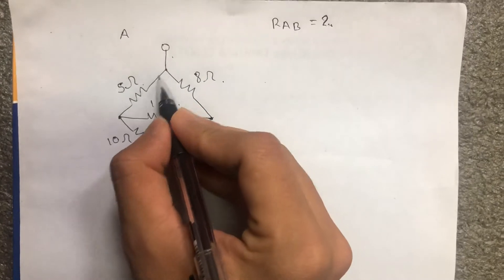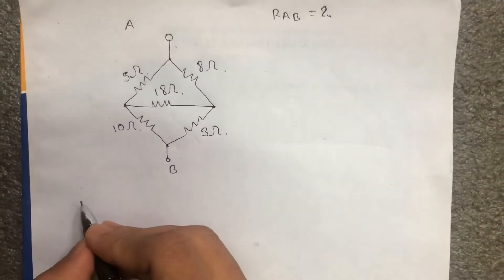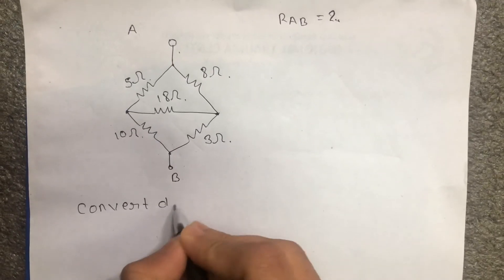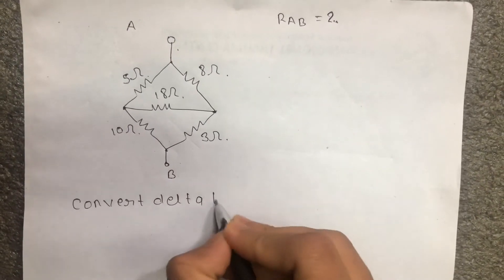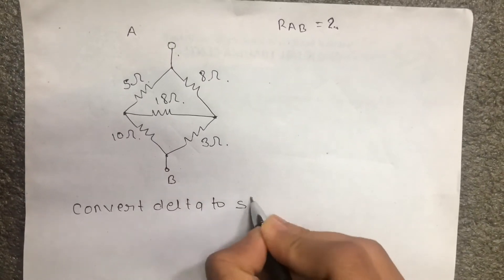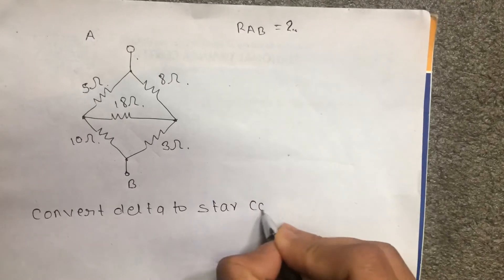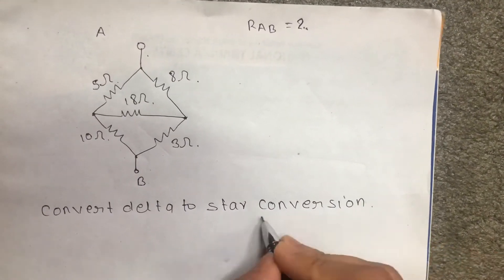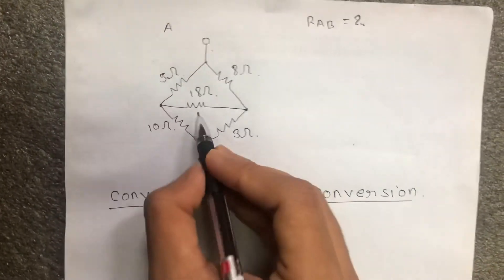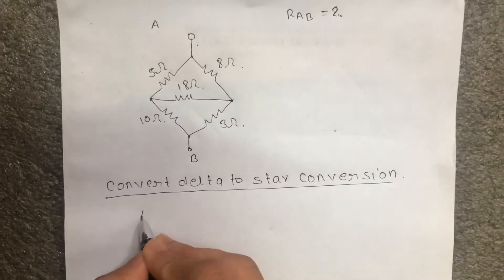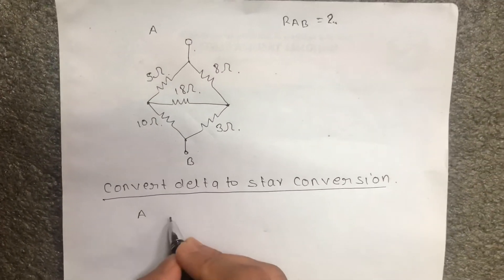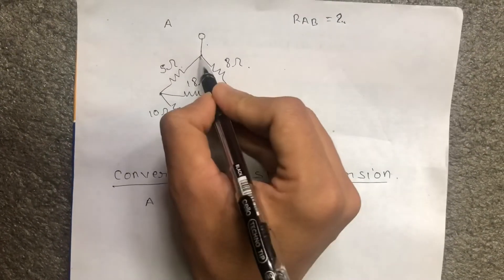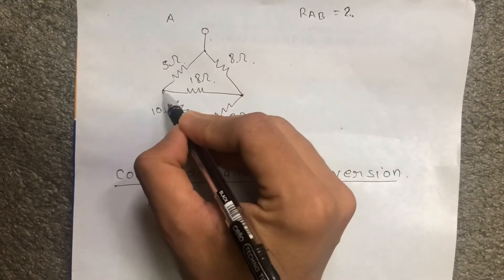Now we will convert delta into star — delta to star conversion. First we will convert delta into star, then proceed with star conversion.